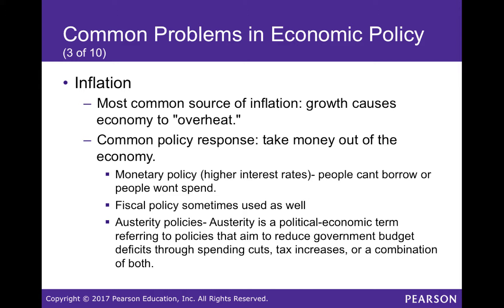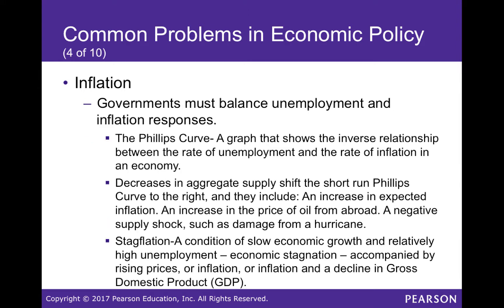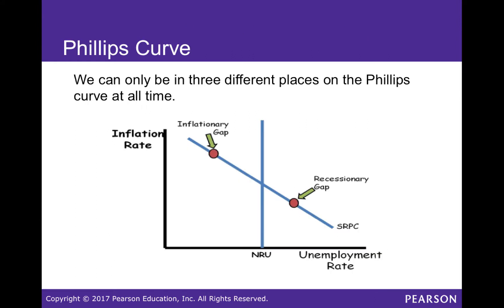Economic growth can cause economies to overheat. One response is to remove money from circulation, which increases its value. Austerity policies aim to reduce government budget deficits through spending cuts, tax increases, or both. The Phillips Curve shows the inverse relationship between unemployment and inflation: low inflation with high unemployment indicates a recession; high inflation with low unemployment indicates an inflationary gap.